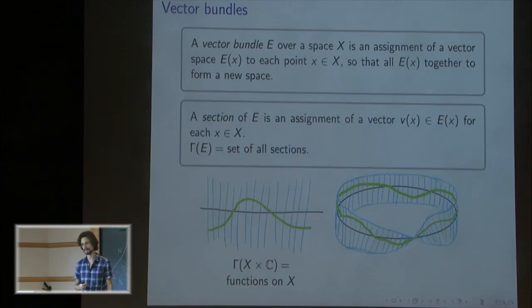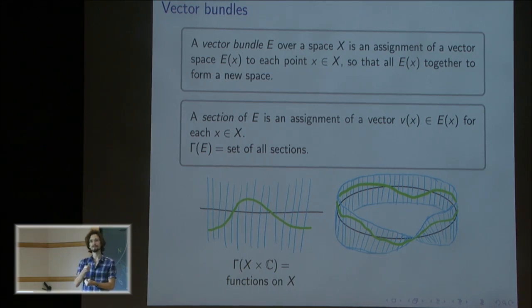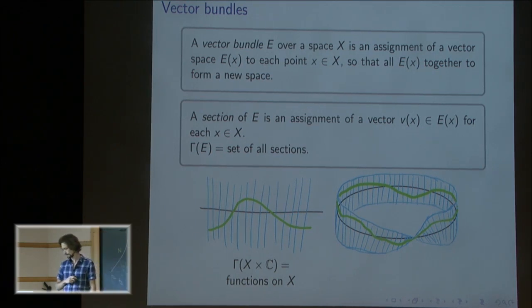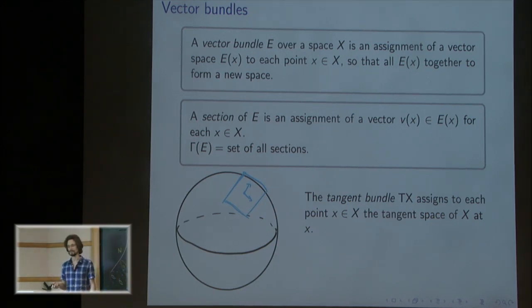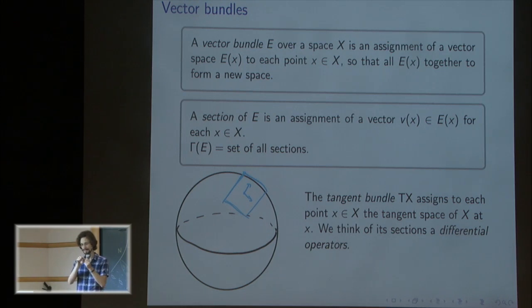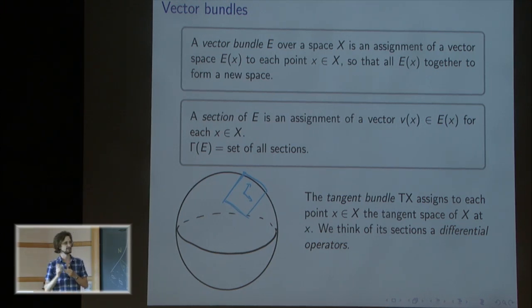A section of a vector bundle is an assignment of a vector in that vector space to each point of your space. I'll write Γ(E) for the set of all sections of a vector bundle. For example, if I have the trivial bundle — just the space X times a one-dimensional vector space — then sections are just assignments of a number to each point, so that's just a function. Maybe the most fundamental example of a vector bundle is the tangent bundle, which assigns to each point the tangent space at that point. We can think of sections of the tangent bundle as differential operators.